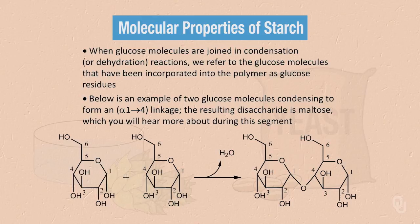Glucose molecules can join together in a condensation or dehydration reaction. We refer to glucose molecules incorporated into a polymer as glucose residues, because water has been lost when the two molecules were joined. Below is an example of two glucose molecules condensing to form an alpha-1,4 linkage. The resulting disaccharide is maltose. We call it an alpha-1,4 linkage because the hydroxyl attached to one glucose is in the alpha position — remember, batter up beta — therefore alpha is below the plane of the ring.